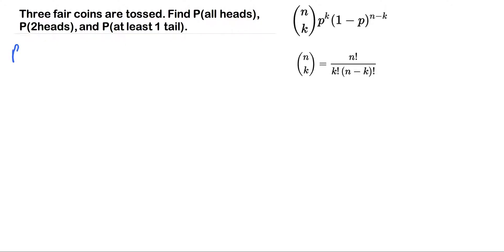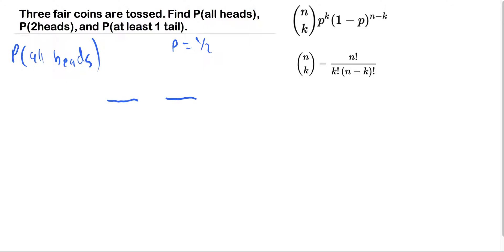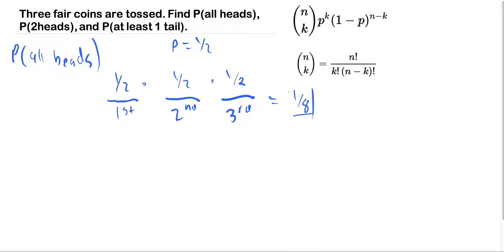For the first part, we note that the probability of flipping heads on a fair coin equals one half — you have a half chance to flip heads and a half chance to flip tails. Writing out three lines, one for each coin flip, the probability of getting heads on the first is one half, on the second is one half, and on the third is one half. Multiplying these together, we get one eighth — that's the probability of all heads. This makes intuitive sense: one half to the third equals one eighth.